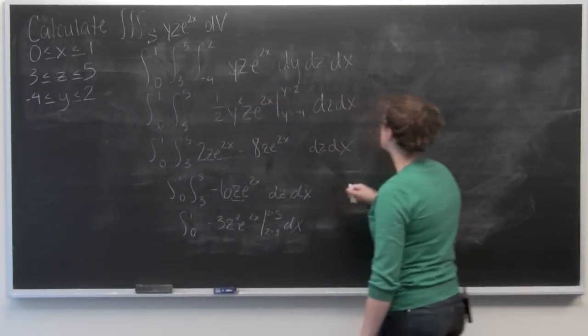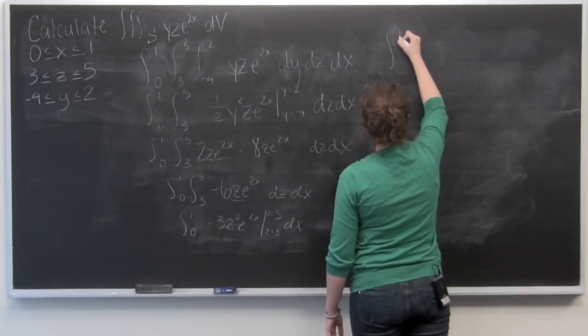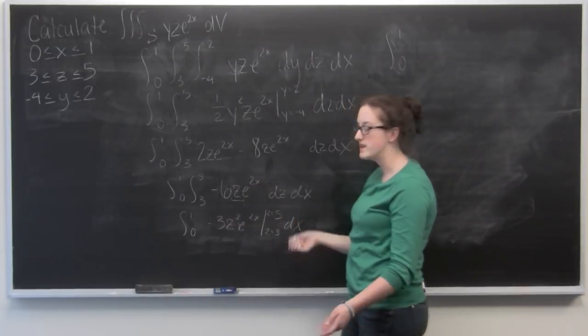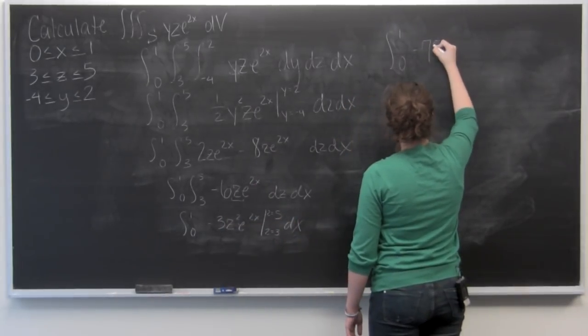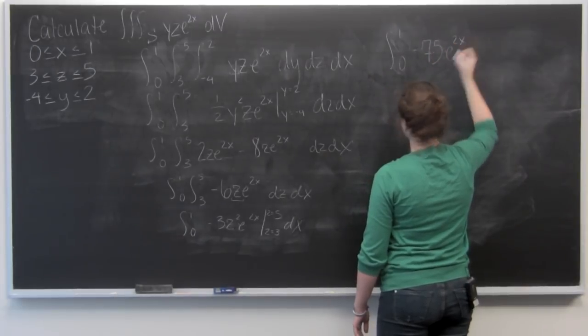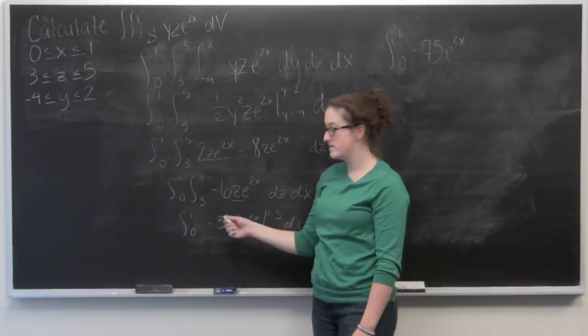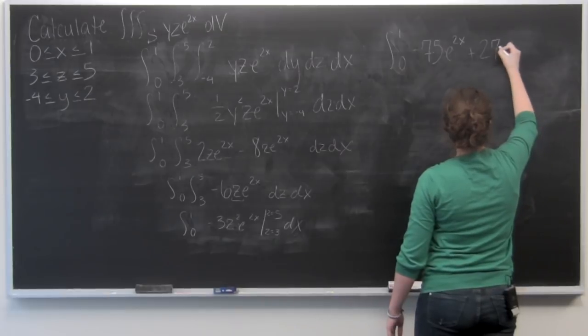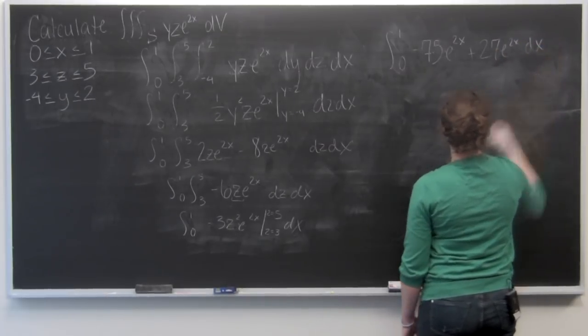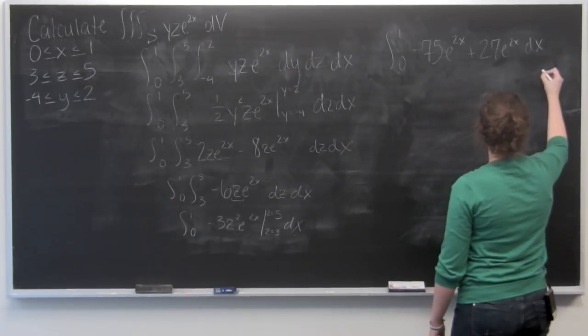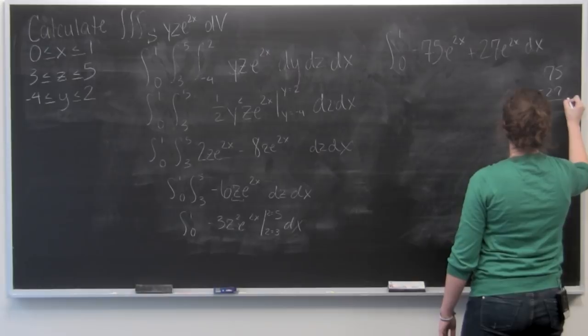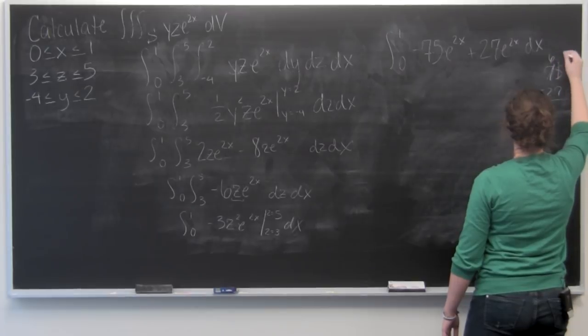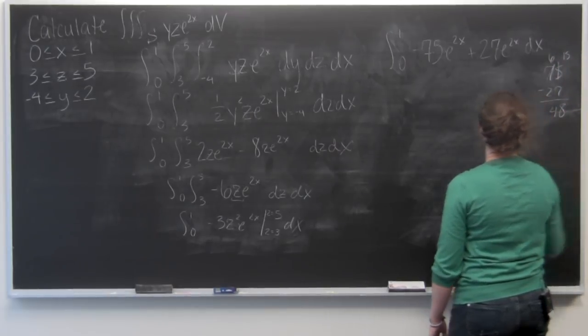So now we're going to evaluate this for z. I'm just going to rewrite it. So first we want to plug in 5. 5 squared is 25 times 3, negative 75. Now I want to plug in 3. 3 squared is 9 times 3 is 27. Then we just need to combine these two. So 48.